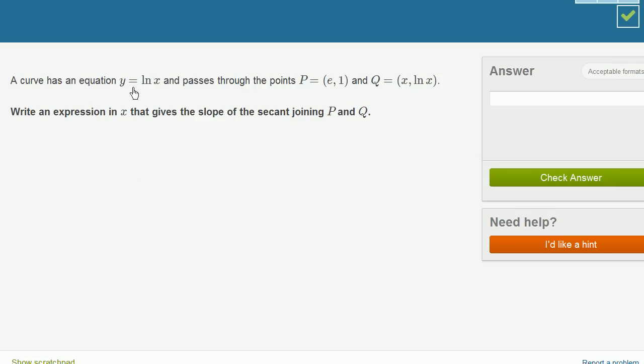A curve has the equation y equals the natural log of x and passes through the points P equals (e, 1) and Q equals (x, natural log of x). Write an expression in x that gives the slope of the secant joining P and Q.